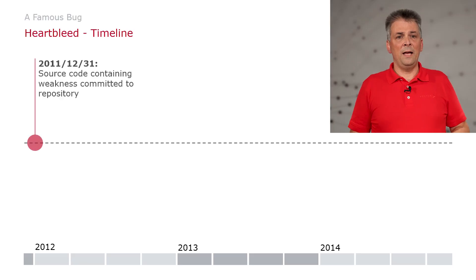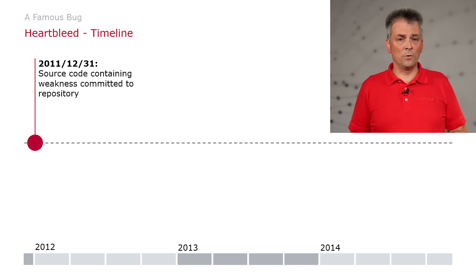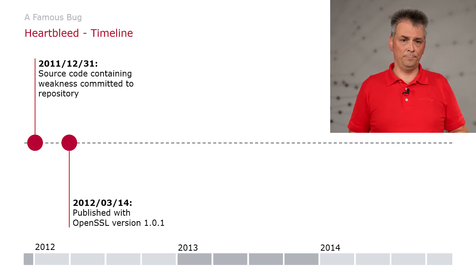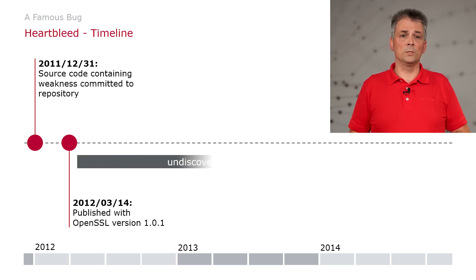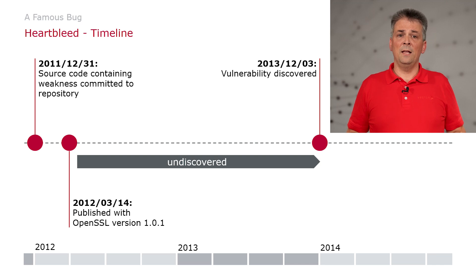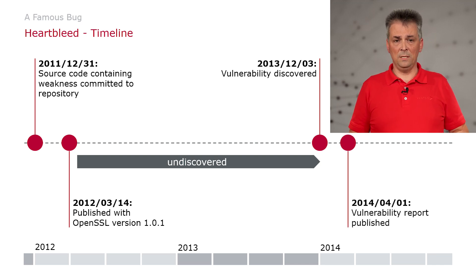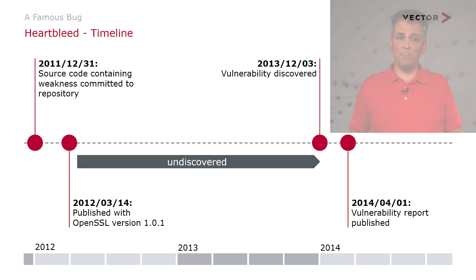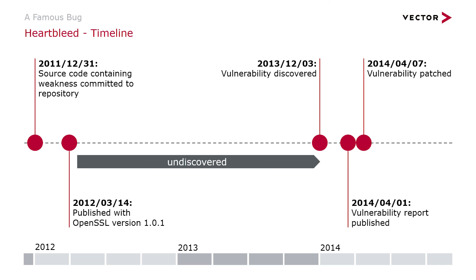Let's take a look at the timeline. End of 2011, on the 31st of December, the weakness was committed to the repository that later on was integrated into OpenSSL 1.0.1. And once this was released, this weakness was in the world. Then it stayed undiscovered for almost two years. At the end of 2013, the vulnerability was discovered. And then in March of the following year, 2014, the vulnerability report was published and then fixed. So it took a long time from the introduction of this vulnerability to the fix.